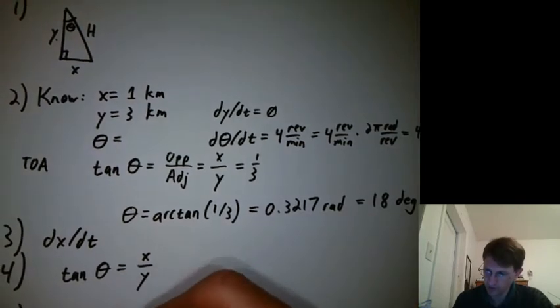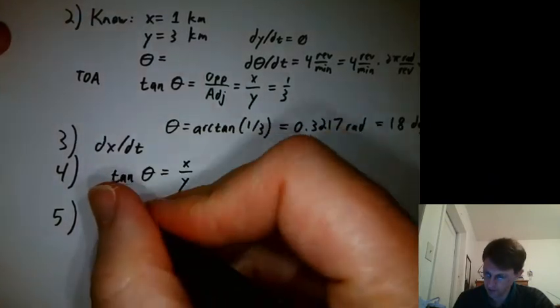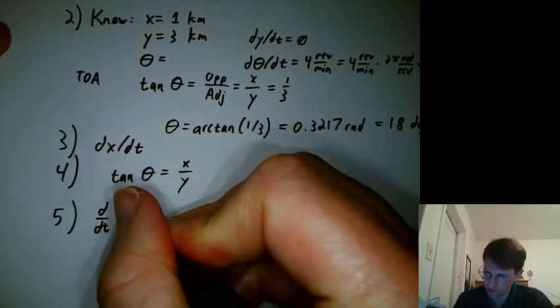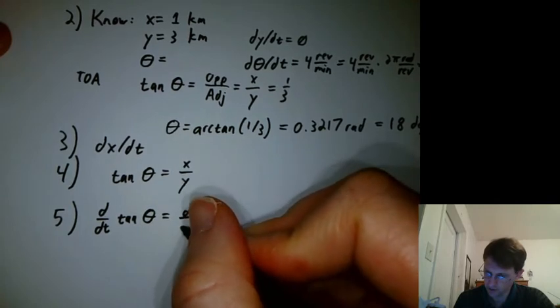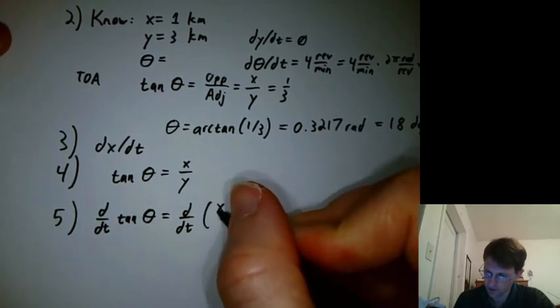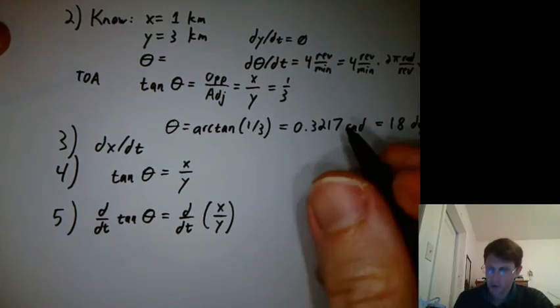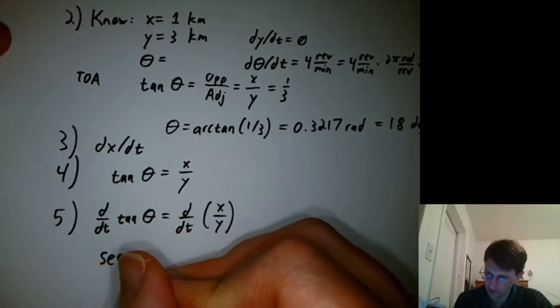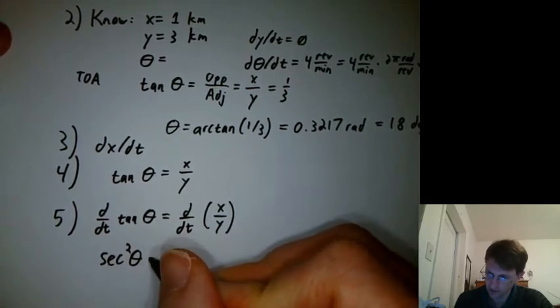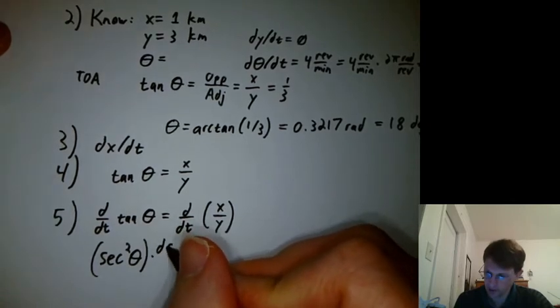Step five, take the derivative. We need to know that, so this is d/dt tangent theta equals d/dt x over y. What's the derivative of tangent? That's something we often have to look up. It's secant squared theta. But then because of the chain rule, we have to say times d(theta)/dt.